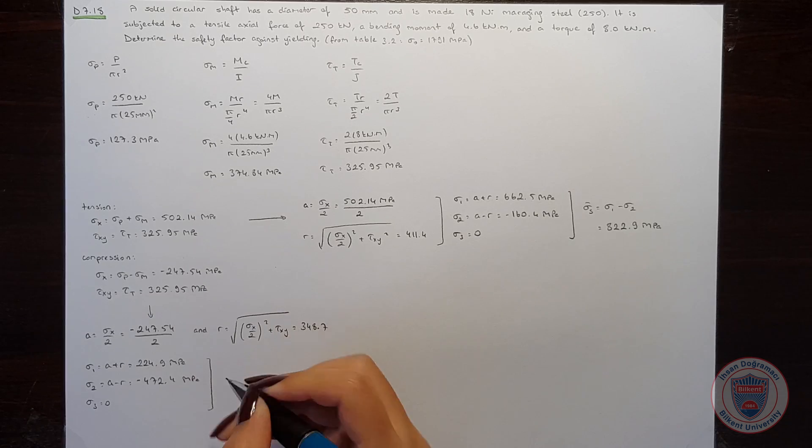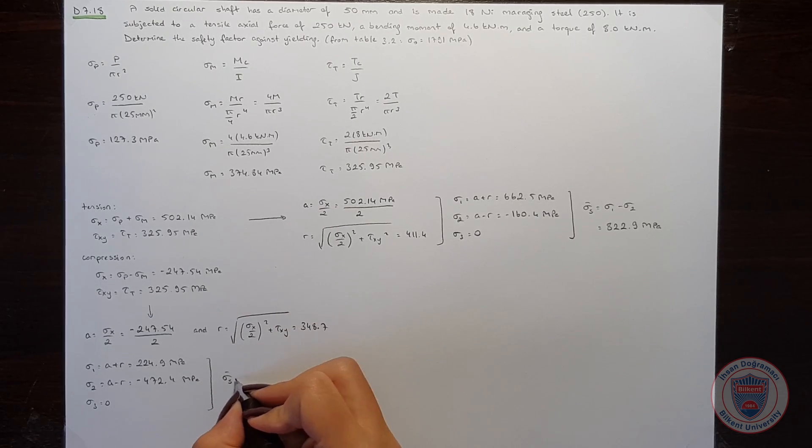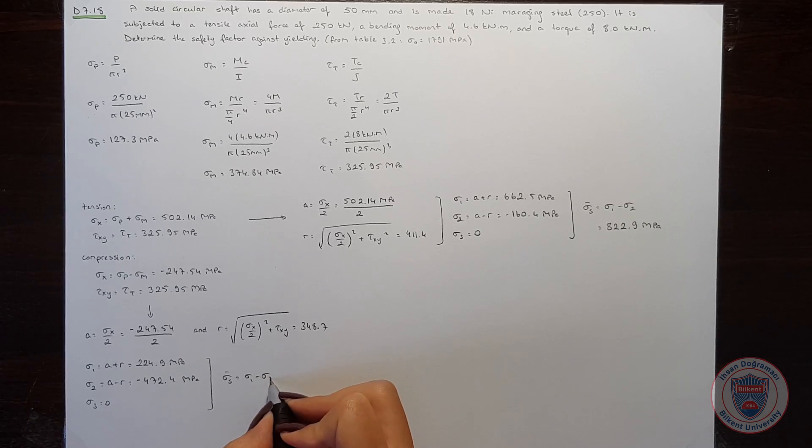And in this case, our sigma s will be sigma 1 minus sigma 2, because they have the biggest difference. And it will be 697.3 MPa.